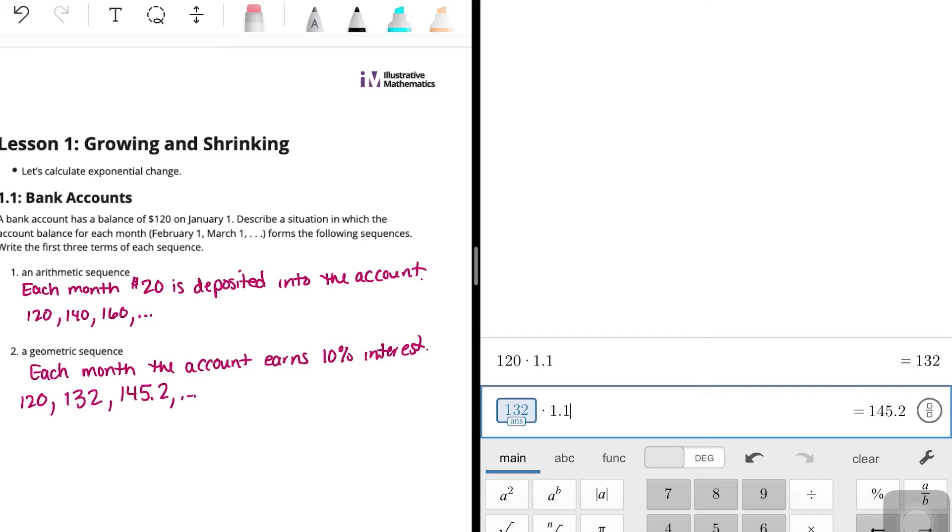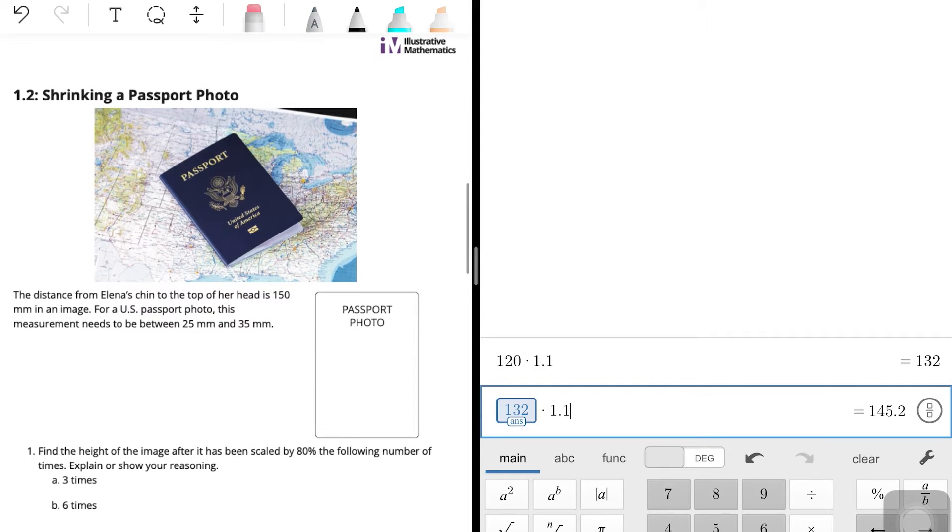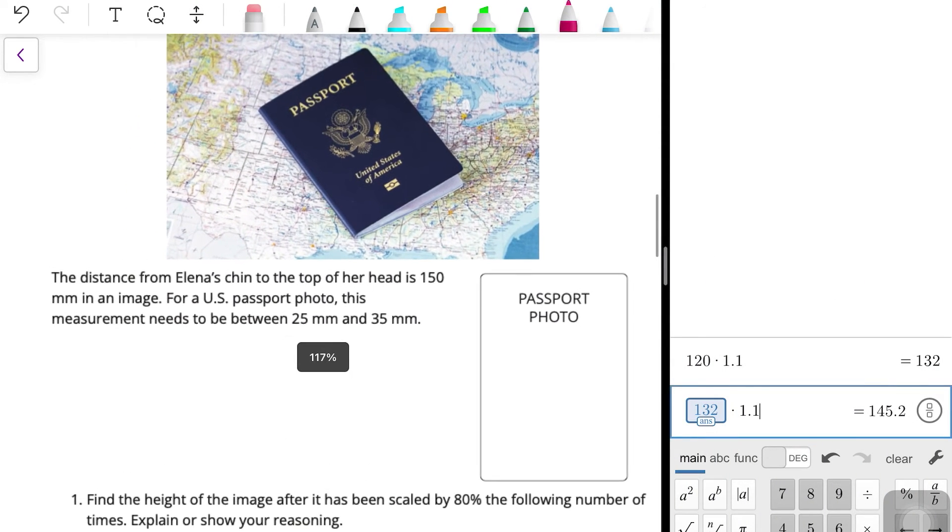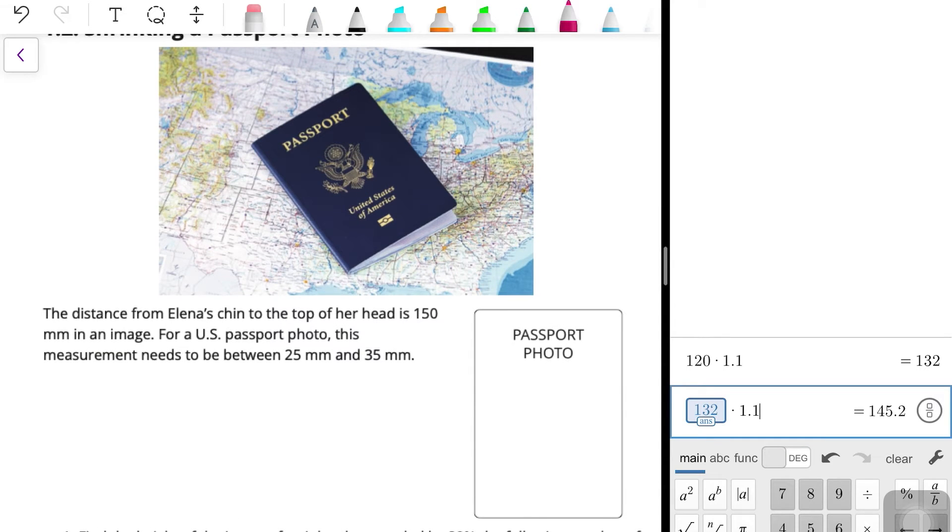And then you would keep multiplying each month by 1.1. All right, let's take a look at the next part. All right, so we have a shrinking a passport photo. The distance from Elena's chin to the top of her head is 150 millimeters in an image. For a U.S. passport photo, this measurement needs to be between 25 and 35 millimeters. So she needs to shrink her photo so that it will be the regulation size.